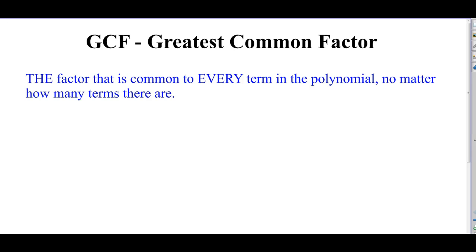It doesn't matter if your polynomial is a short two-term polynomial — a binomial — or it's a 15-term polynomial. It's common to everybody. So if any term is missing it, then that factor is not common. That's the key. Our factoring methods depend on how many terms the polynomial has, but the GCF is universal — it doesn't matter how many terms.